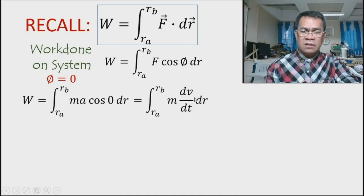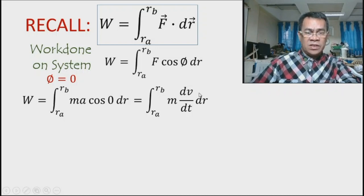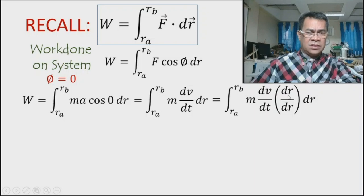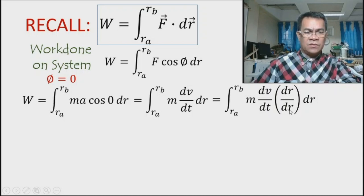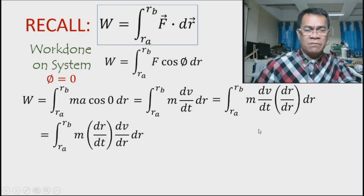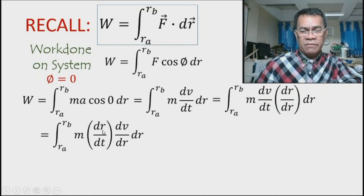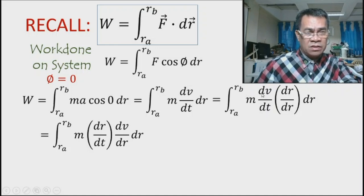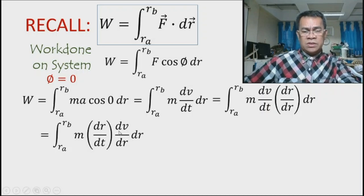Acceleration a is the infinitesimal change in velocity per time interval, dv/dt. The cosine of zero is one, so it cancels. We have the integral of m (dv/dt) dr. Now we multiply by dr/dr — which is just multiplying by one, so nothing changes mathematically. We then interchange dt and dr: replacing dv·dr/dt with dv·(dr/dt).